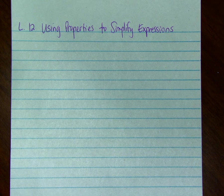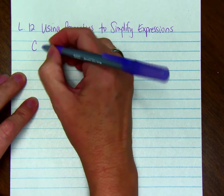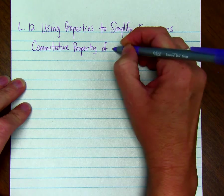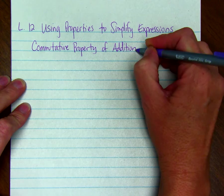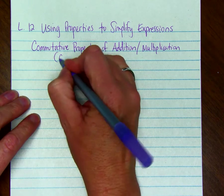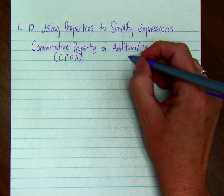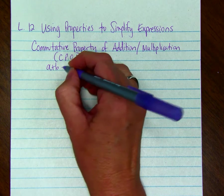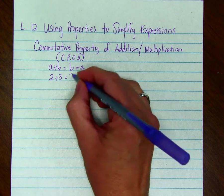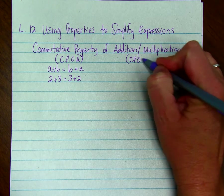There is a property called the commutative property of addition and the commutative property of multiplication. An example of the commutative property of addition, which you can write using capital letters CPOA, is A plus B equals B plus A. So if A is 2 and B is 3, we can say that 2 plus 3 equals 3 plus 2.